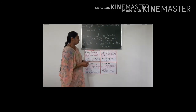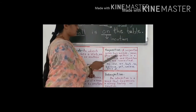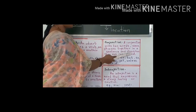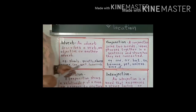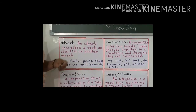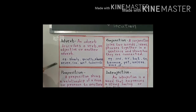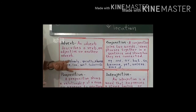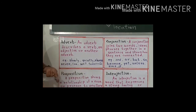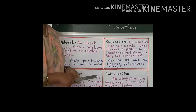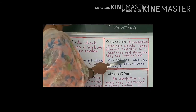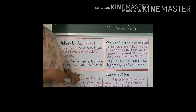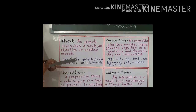The next part of speech is conjunction. A conjunction joins two words, ideas, or phrases together in a sentence and also shows how they are connected. Conjunctions are also called connectors because they are used to connect or join words, ideas, and phrases together. Have a look at some examples of conjunctions: and, or, but, so, because, yet, unless, since, if. Now we will see some sentences about conjunctions.